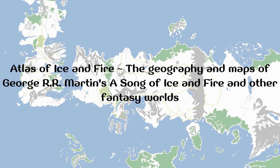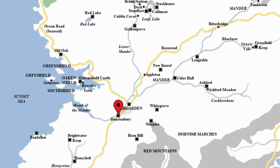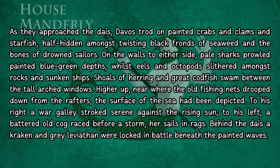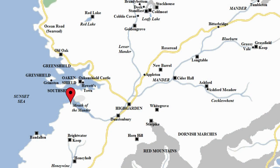I will comment on Dustonbury, because I don't agree with the location assigned to it. They have put the original Manderly house underneath Highgarden — there is no way it was that far into the Reach. House Manderly has a merman on their arms, and their keep's floor has painted crabs and clams and starfish, half hidden behind seaweed and the bones of drowned sailors. On the walls are sharks prowling painted blue-green depths. We have eels and octopods and sunken ships, herring and great codfish swimming between the windows, a war galley and an old cod racing before a storm, and a kraken and a grey leviathan locked in battle beneath the painted waves. They were obviously a coastal house connected to the sea — their name is Manderly, so Dustonbury must be where the Mander flows into the sea. They were called Manderlys because they controlled who was going in and out of the Mander.